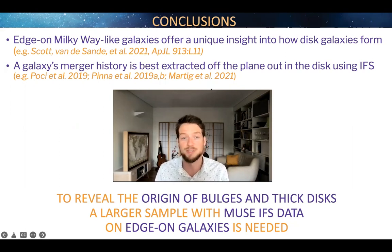So I'm going to finish by saying that if we really want to reveal the origin of bulges and thick disks, we need a much larger sample with MUSE IFS data on edge-on galaxies. Thank you.